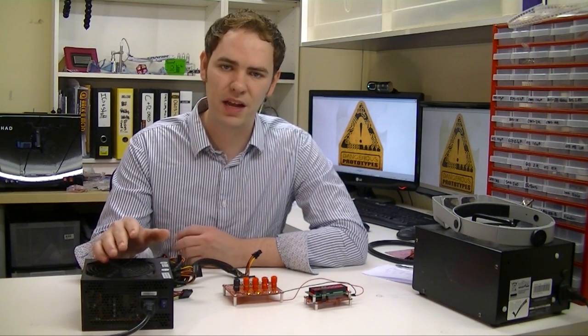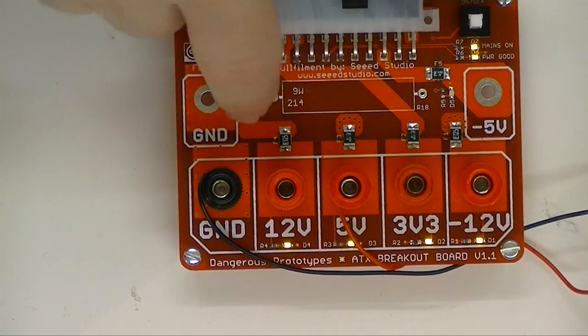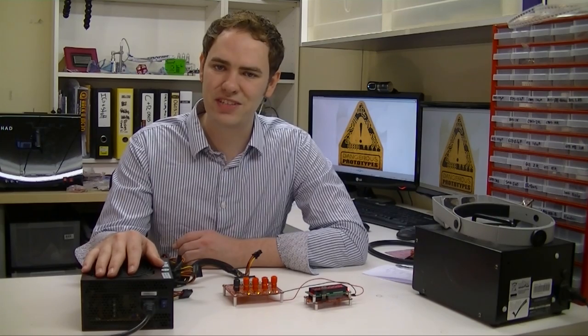In our experience most power supplies don't need that, it just turns out being an unnecessary source of heat and an unnecessary waste of electricity. So on this board we've got a footprint for that resistor, but we're actually including it in a baggie separately when you order. That way you can include the resistor, solder it down if you need it, but for most people you won't need it, and you can leave it off and avoid that fire hazard, avoid that source of heat, and avoid wasting electricity.